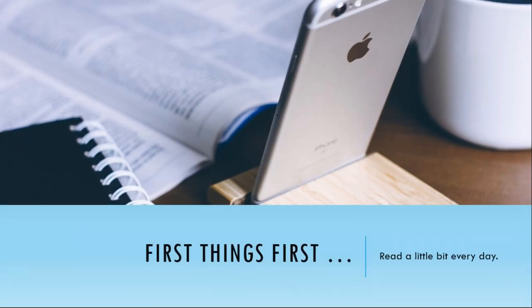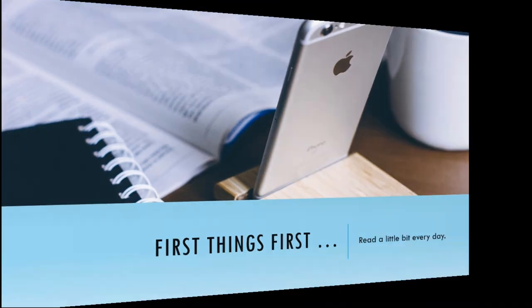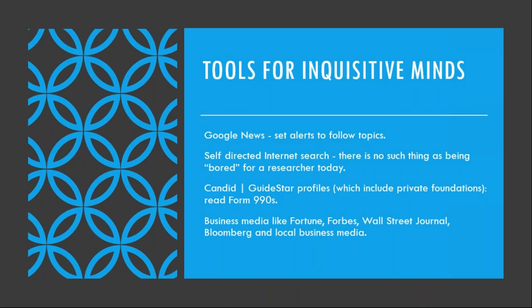First things first: I read every single day and I am addicted to my iPhone. I use Google News Alerts — you can set alerts to follow topics. You can get alerts on the Ford Foundation if you want, just put that in there, and it'll pull up news every day or every week about that person, place, or thing. It doesn't catch every single thing but it catches most of it. I get my email every day and go through it and say, what's going on with so-and-so?